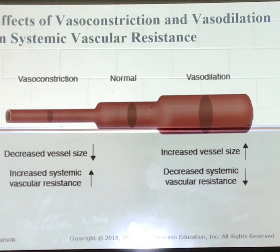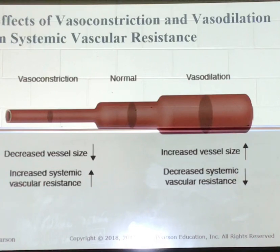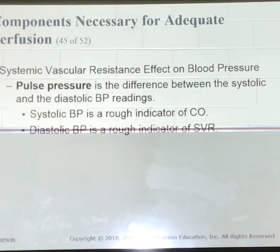Parasympathetic stimulation causes vasodilation, which increases vessel diameter and decreases the systemic vascular resistance. Alpha-1 properties in norepinephrine, released in response to sympathetic stimulation, cause vasoconstriction, which decreases vessel diameter and increases systemic vascular resistance — your blood pressure is going to go up. Systolic blood pressure is the relative indicator of cardiac output, whereas diastolic blood pressure measures systemic vascular resistance.